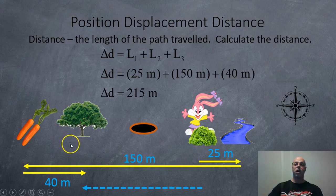And here's a couple ways to calculate it. So for the distance, here's the formula. Distance delta D is equal to your first length plus your second length plus your third length. Or you can call them legs, leg 1, leg 2, leg 3. So here we got 25 meters plus 115 meters plus 40 meters. Altogether, 215 meters of exercise or travel.